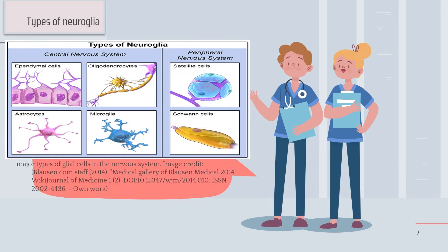Supporting cells in the brain: inside the central nervous system we have ependymal cells that only go to the endocrine, which is dropside microglia. In the peripheral nervous system we have satellite cells and Schwann cells.